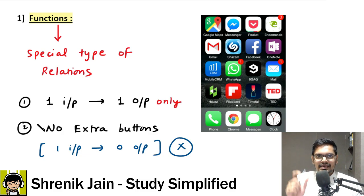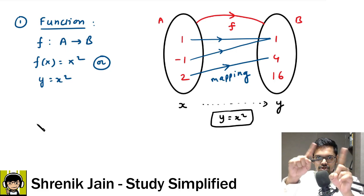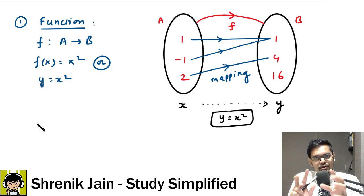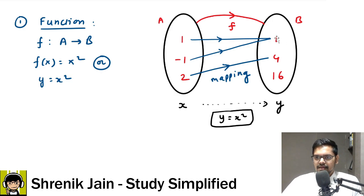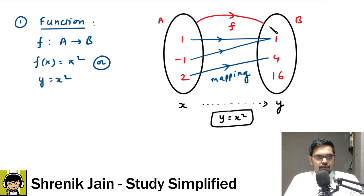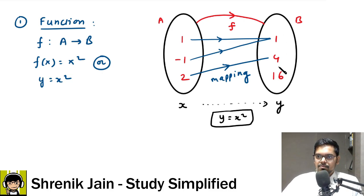Now let's dive into the technicalities. Relations and functions are not different things — relation is the parent, function is a special child. Here I have a mapping from set A to set B via function f. Set A has elements 1, −1, 2 and set B has elements 1, 4, 16. The mapping condition is y = x², where x represents inputs and y represents outputs.